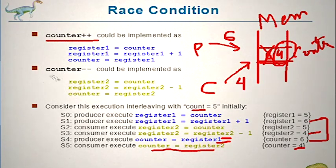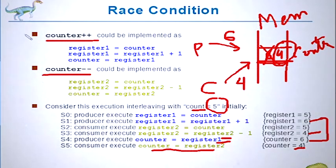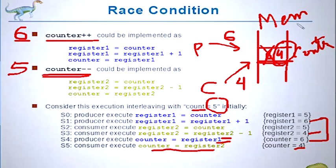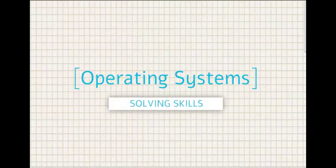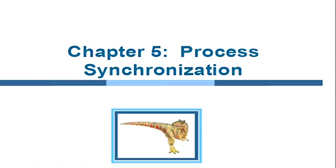If we were to do counter plus plus and counter minus minus separately, counter plus plus would increment the initial value 5 to 6, and then counter minus minus would decrement the value 6 to 5 again. But we are getting a very wrong value of 4. This is known as a race condition.